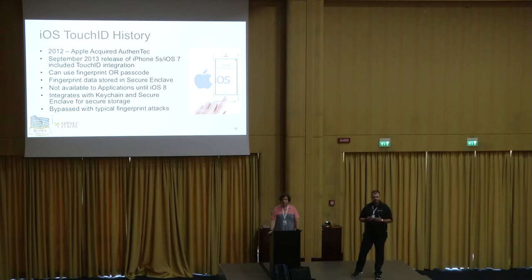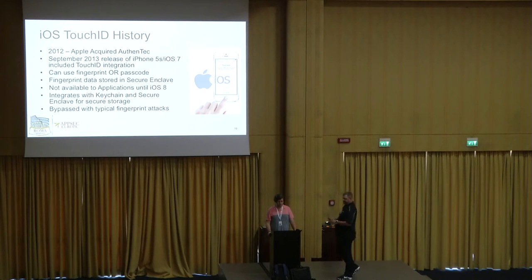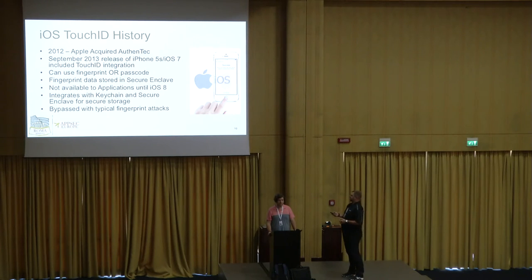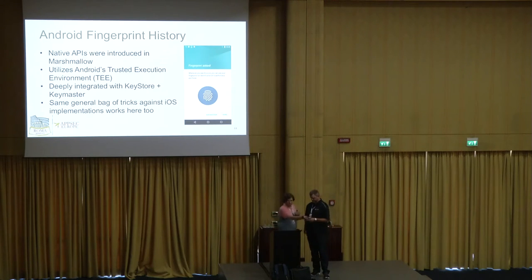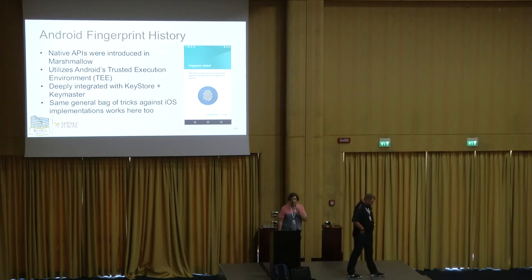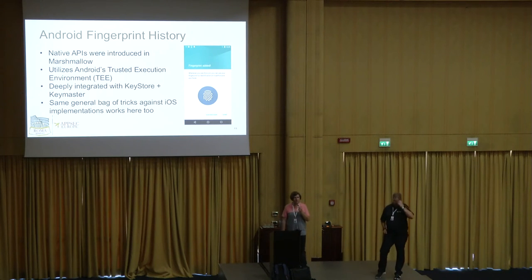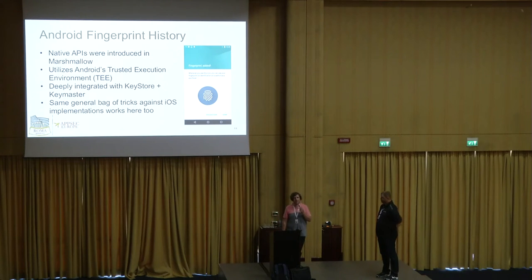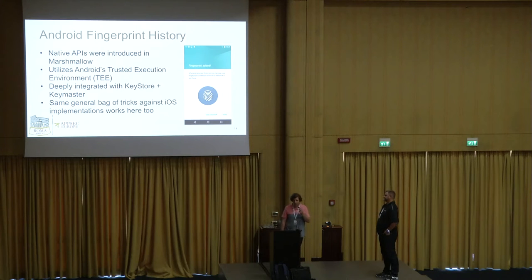On Android, Marshmallow is when they first introduced native APIs. Previously, Samsung and some other vendors had implementations, but those were device and hardware specific. In Android 6 Marshmallow, Android first introduced the native APIs, so unlike Apple, you had programmatic access from day one. In terms of the implementation and integration with the trusted execution environment, that's a really fundamental part of the implementation itself.